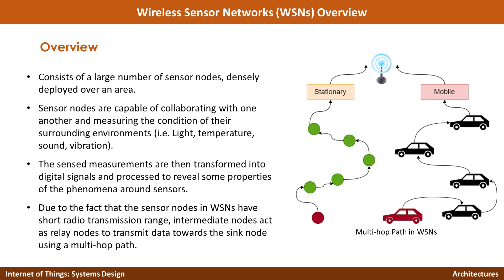In this section I'm going to introduce wireless sensor networks. Wireless sensor networks, or WSN, are the predecessor of Internet of Things. Typically a wireless sensor network consists of a large number of sensor nodes densely deployed in a certain area. Sensor nodes are capable of collaborating with one another, measuring conditions of their surrounding environment such as temperature, light, sound, and vibration.